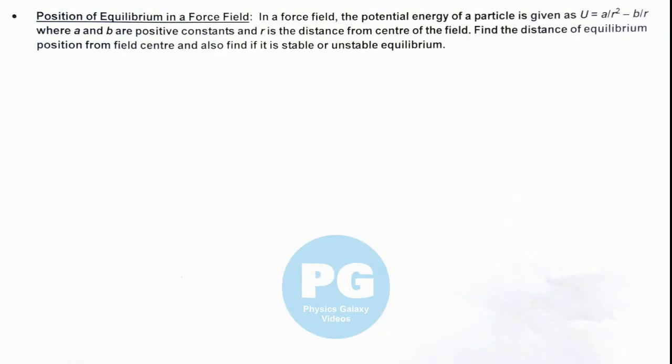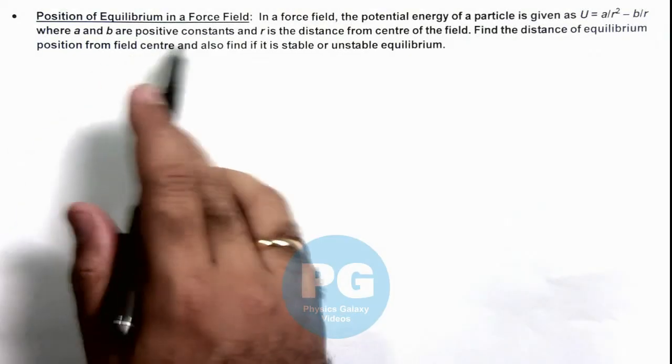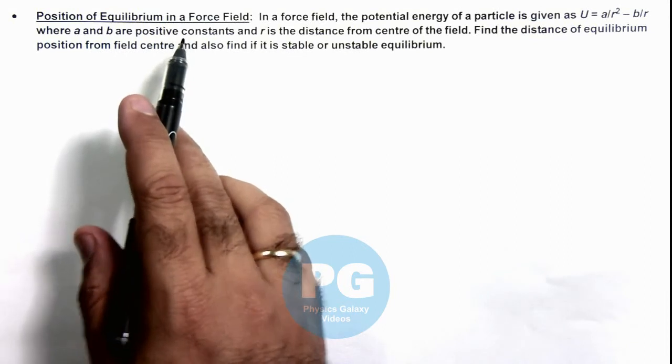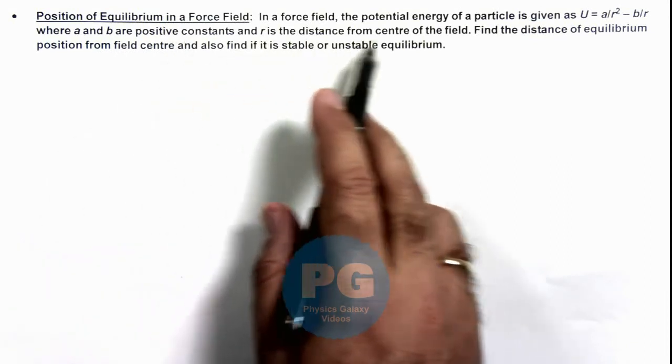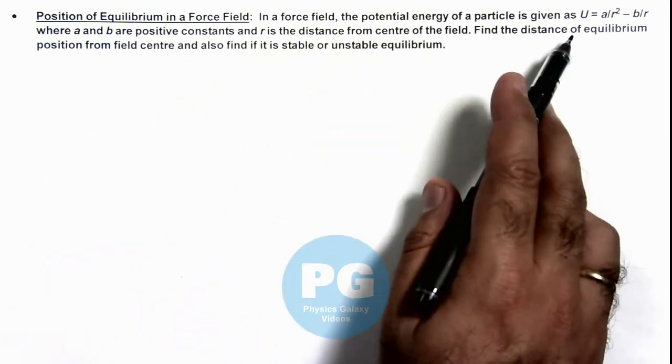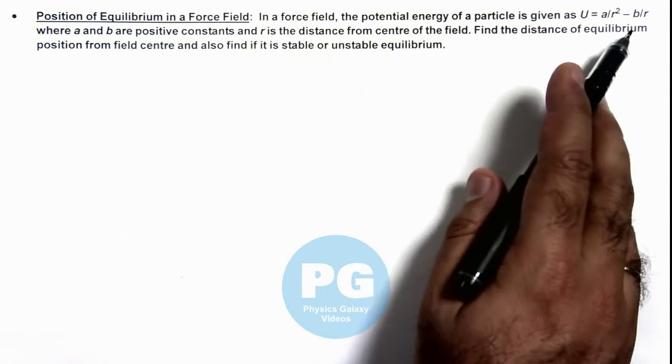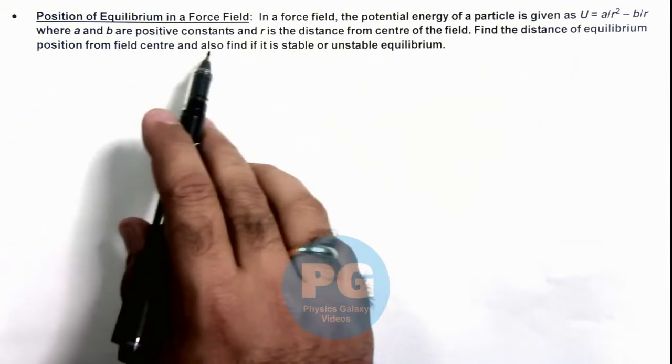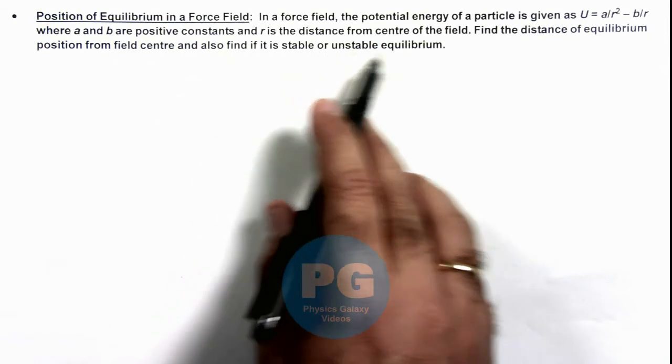In this illustration, we'll analyze the position of equilibrium in a force field. Here we are given that the potential energy of a particle is U = a/r² - b/r, where a and b are positive constants and r is the distance from the center of the field.